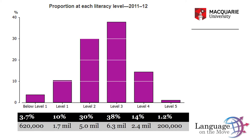The statement that 99% of Australians can read and write may be true for the ability to decode letter shapes and match letters to the sounds they most frequently represent. But for 3.7% of adult Australians, or around 620,000 people, that's about it. People with literacy below level 1 can read brief texts on familiar topics and locate a single piece of specific information, but struggle with complex sentences or paragraphs and are not good at making use of other text features.